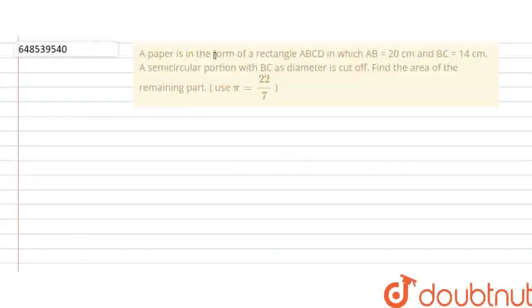Question is given. A paper is in the form of rectangle ABCD in which AB equals to 20 cm and BC equals to 14 cm. A semi-circular portion with BC as diameter is cut off. Find the area of the remaining part. Use pi equals to 22 upon 7.